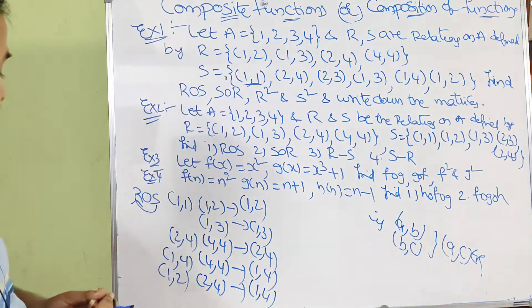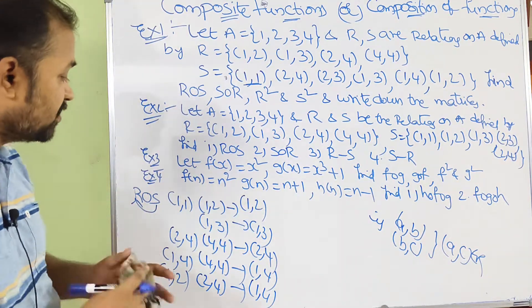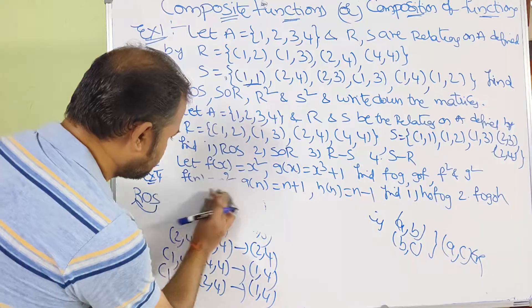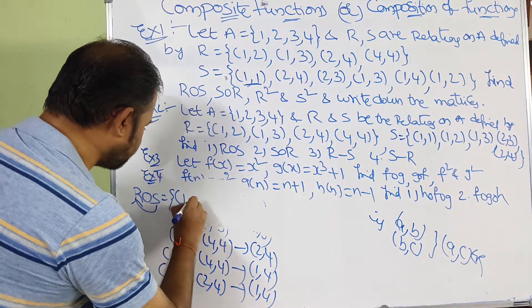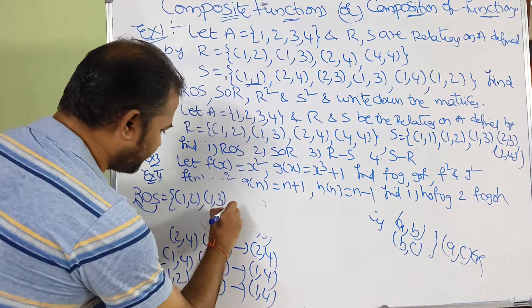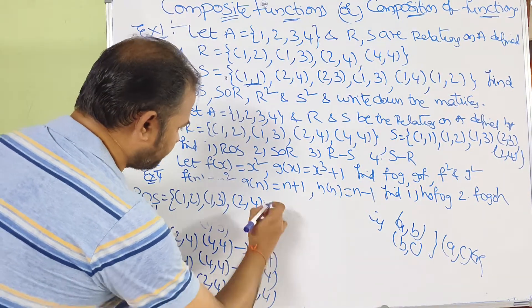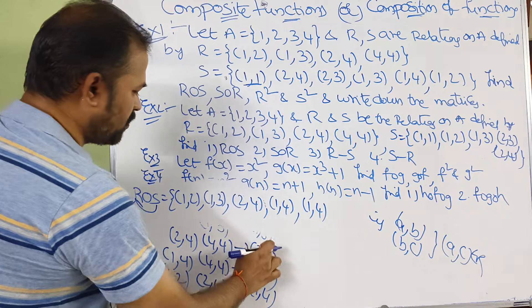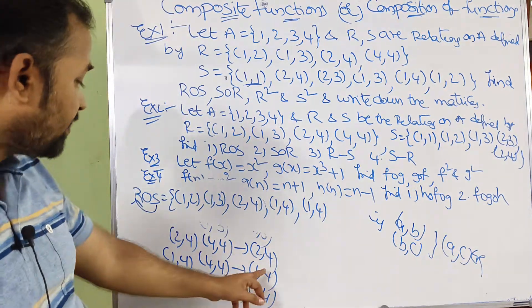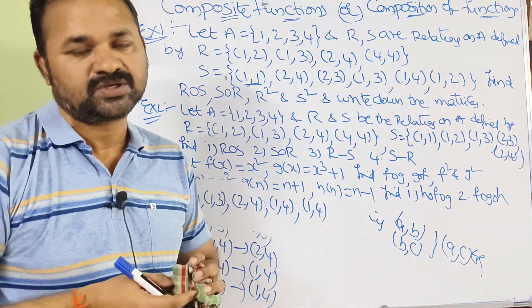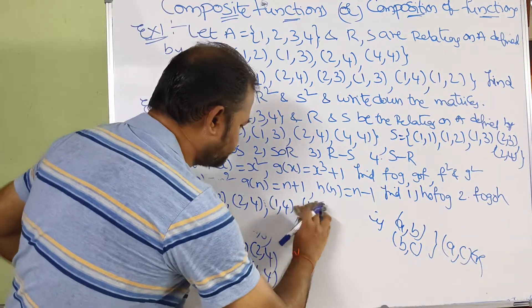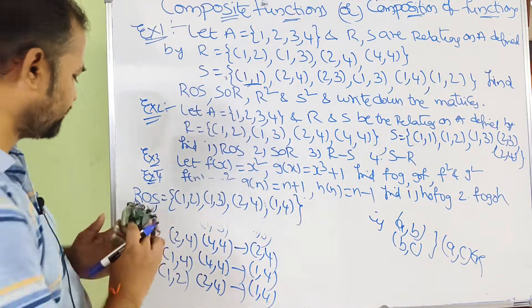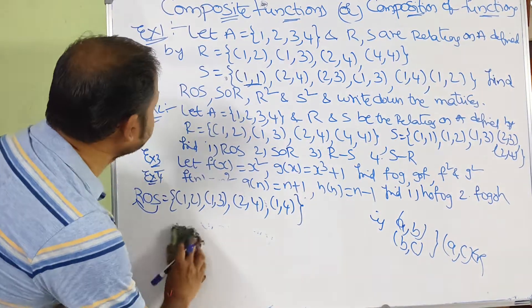So the result of R∘S is: (1,2), (1,3), (2,4), (1,4). Note that (1,4) appears twice, so we write it only once — ordered pairs must be unique. So we write each pair only once. In this way we can calculate R∘S.